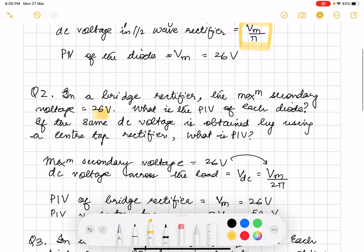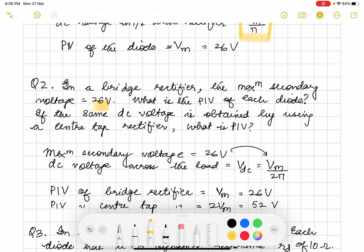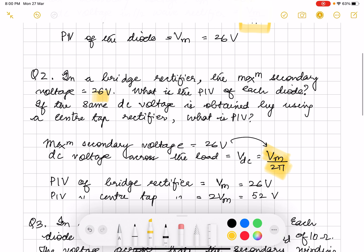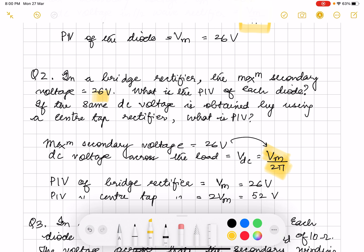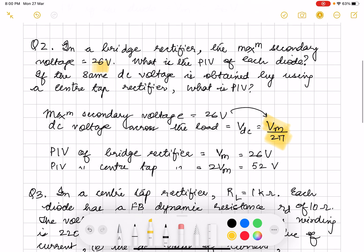So what is the PIV of each diode? The same DC voltage across the load is Vdc is Vm over 2 pi. So PIV of bridge rectifier comes out to be Vm. If you remember we have done this in the class, same as 26, and the PIV for center tap is twice of Vm. Again this is a simple one.